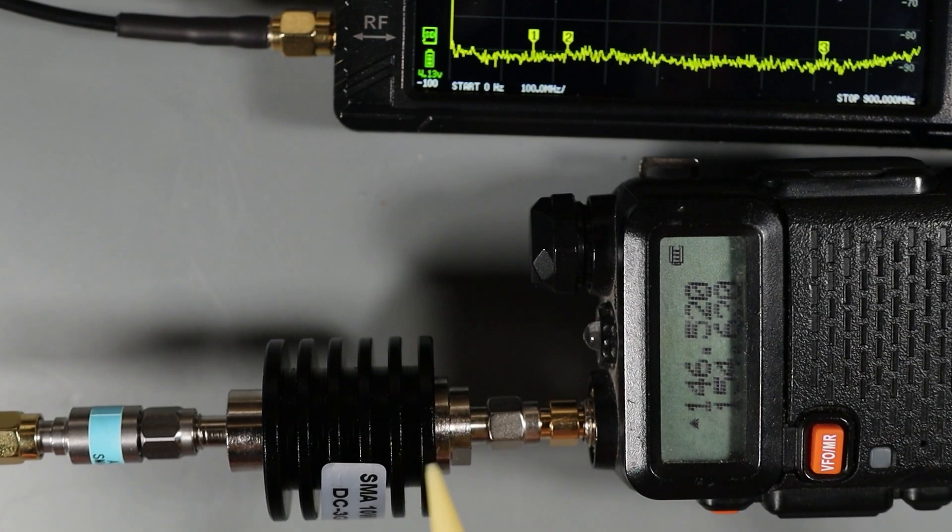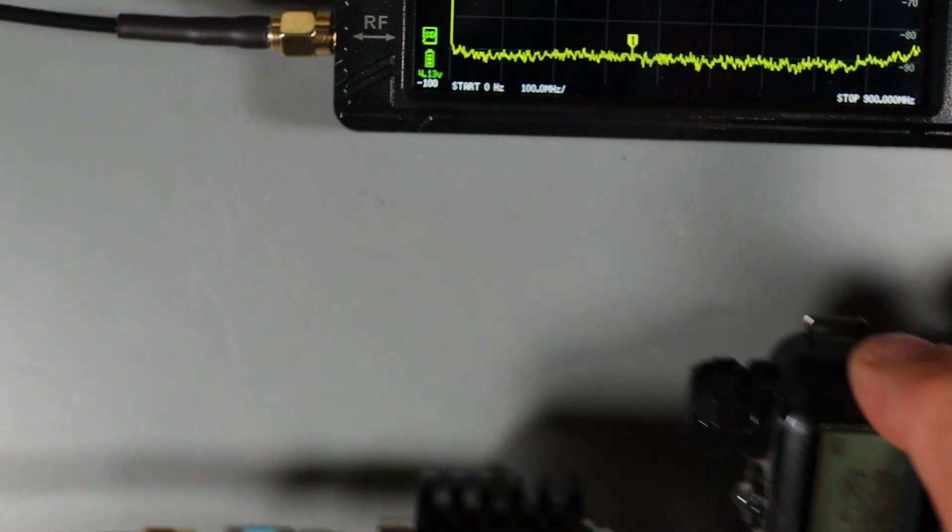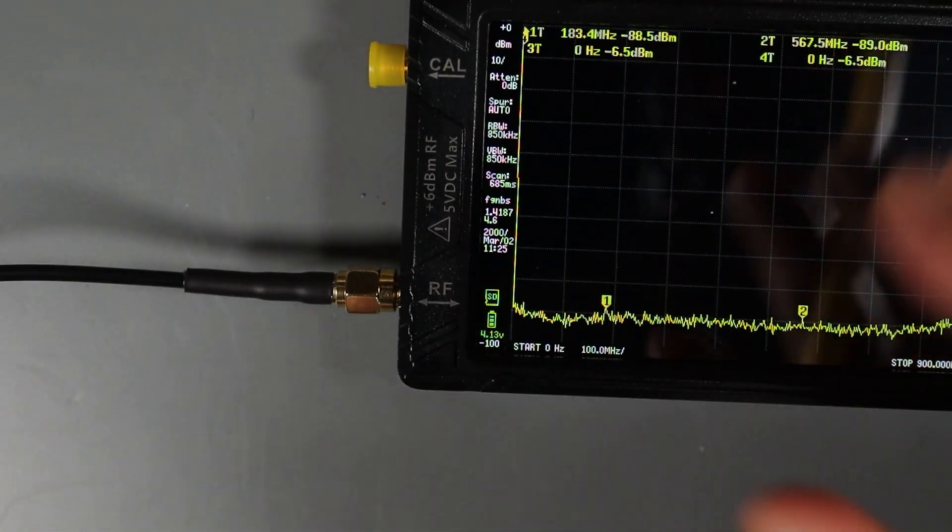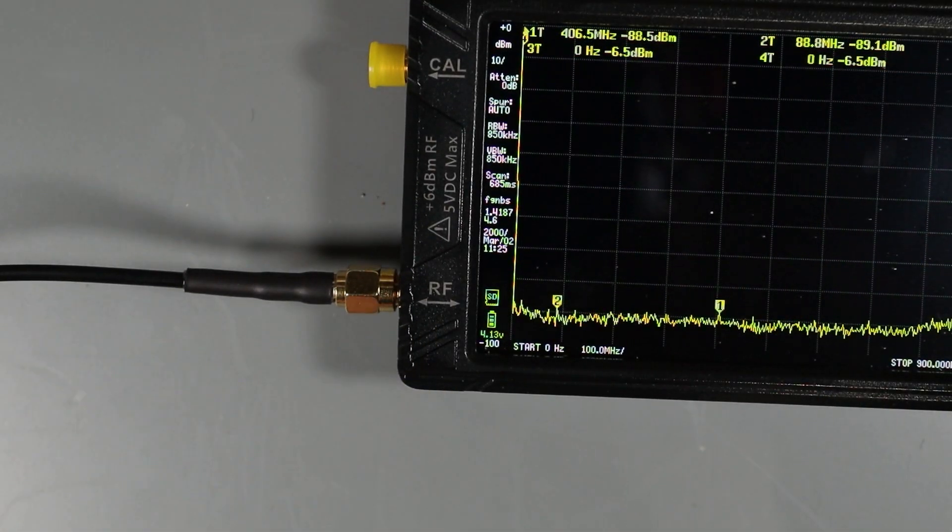But I will show you that I'm going to use 40 decibels of attenuation between the radio and the TinySA to cut the signal level down so that I don't overload the TinySA. I've got the Baofeng radio connected up directly to my attenuators and then I've got one of the patch cables connected to the RF input jack on the TinySA.